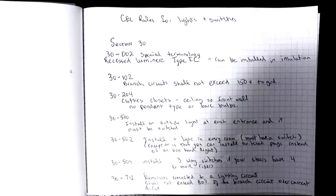30-002 under special terminology speaks to a recessed light fixture. If you're going to install that into an attic space that has insulation, you're going to need to make sure that those are type IC. If they're just installed between floors, say in the ceiling space above your main floor and your second floor where there isn't going to be insulation, then it's not necessary to get type IC.